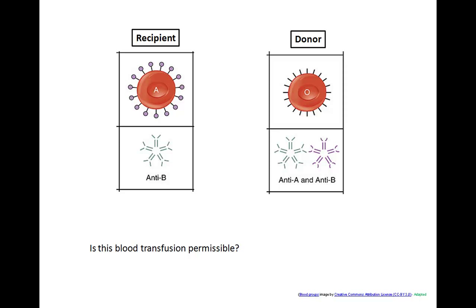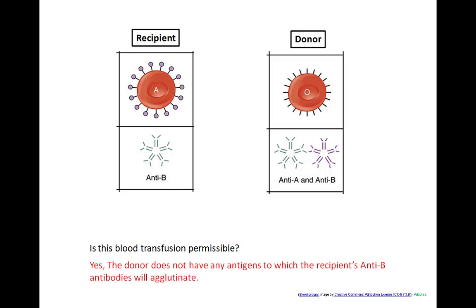Third example: type A blood is the recipient and type O is the donor. Does type A have an antibody against type O's antigens? No. So this transfusion is permissible because, even though type A does have anti-B antibodies, the donor type O has no antigens — not even the B antigen — so no agglutination will occur.